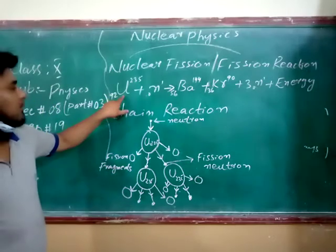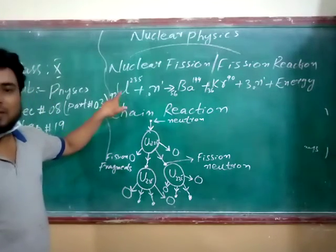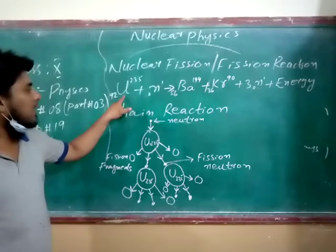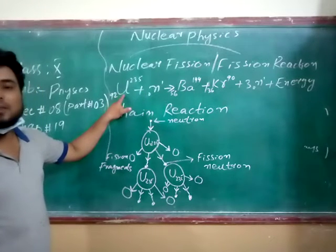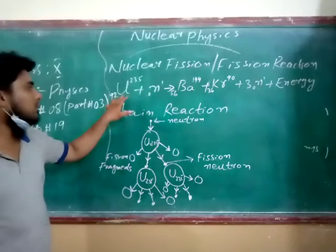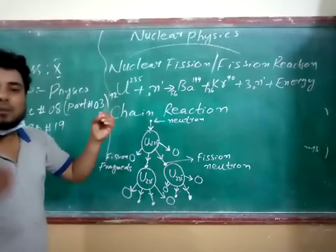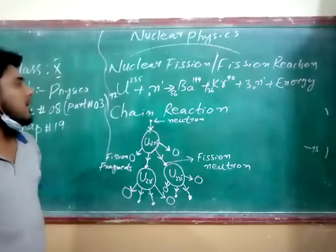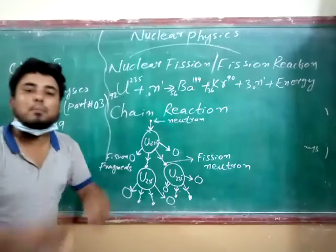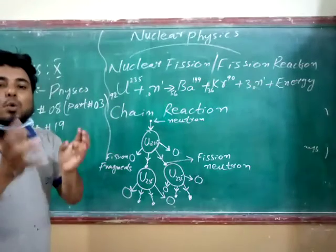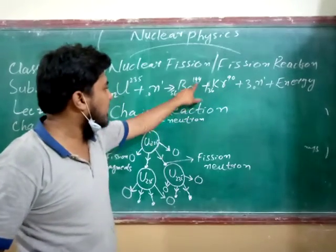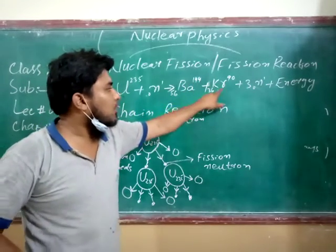Here we have a uranium nucleus, which is the highest radioactive element. When neutron is bombarded, the uranium is breaking into two smallest nucleus. These two small nucleus are barium and krypton.